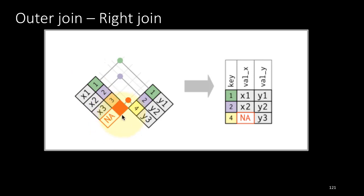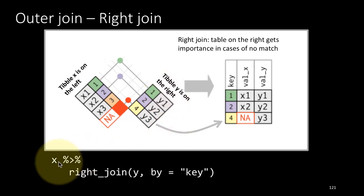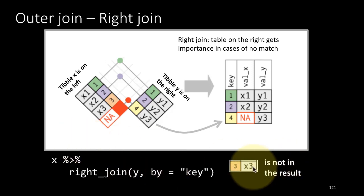The three of the x tibble also doesn't have a match in the y tibble, but because we are doing a right join, the tibble on the right gets priority and any rows on the right tibble that have no match in the left tibble still appear in the output. So this time we see that 4y3 appears in the output but 3x3 does not. x is the left tibble, y is the right tibble — we are mentioning x first and y next, so x becomes left and y becomes right, and we are joining by key.